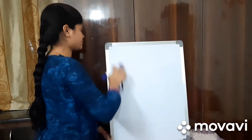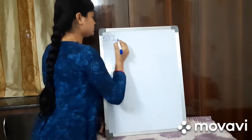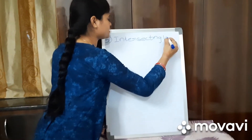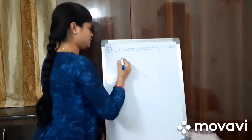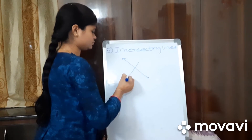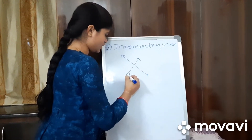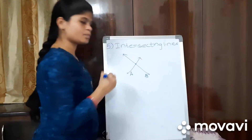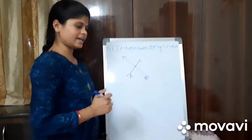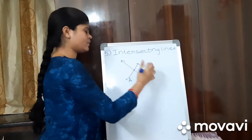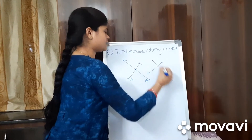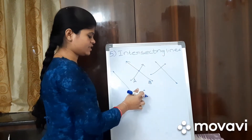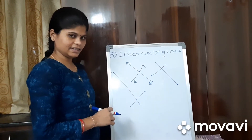The fifth one is intersecting lines. What do you mean by intersecting lines? If this is one line — it may be a line segment, or a line, or anything — I am calling this line A and this line B. Line A and line B are intersecting at one point, so these two lines are called intersecting lines. They may intersect in any way. Lines which are meeting at one point are called intersecting lines.